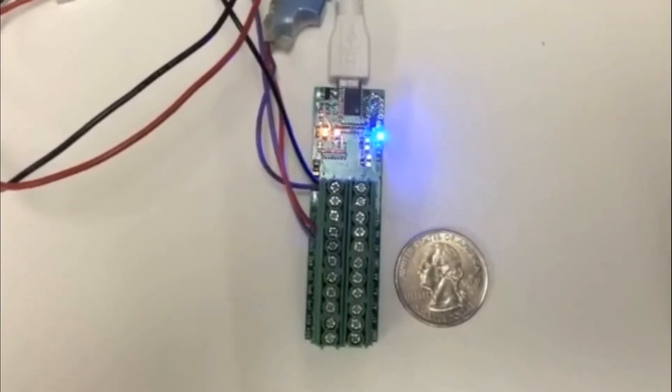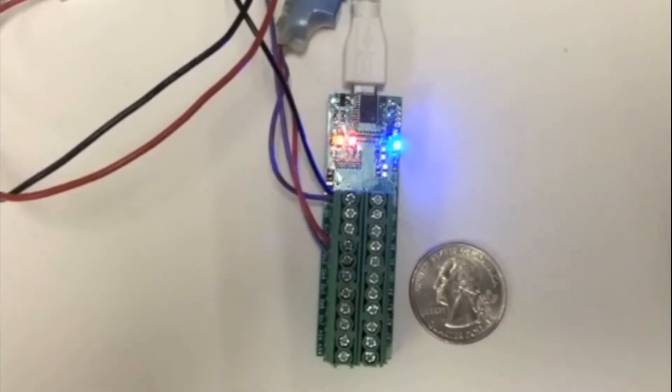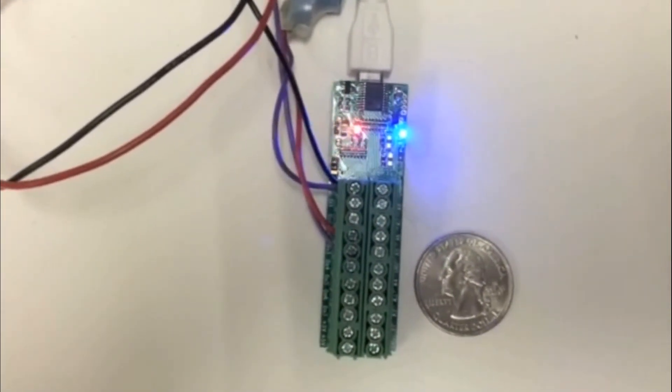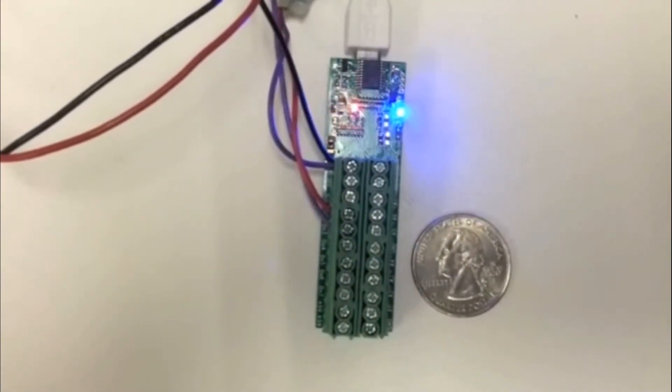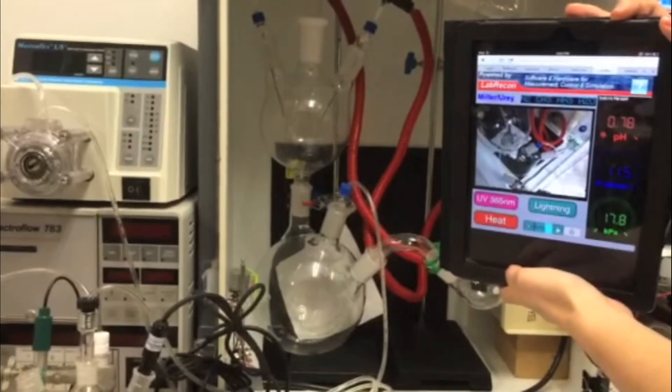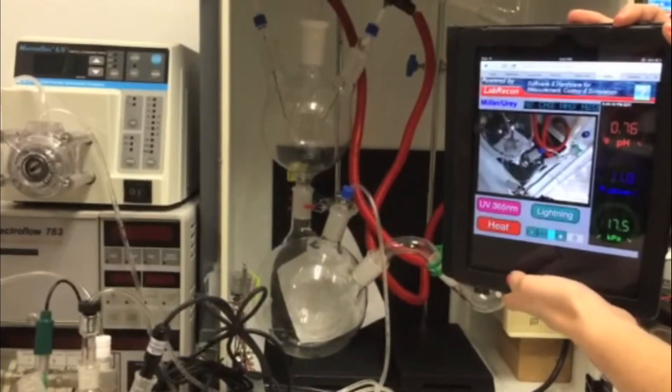Over here, the Recon MiniDAC can be seen next to a quarter. In our Miller-Urey experiment, we are using the MiniDAC to control the UV light source and lightning. Here, I have the interface on an iPad, and I'm going to demonstrate the lightning control.